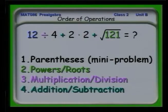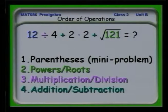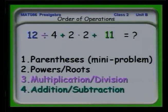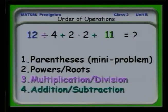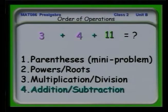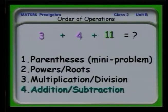Now we go back and substitute that 12 in. The next thing we go after is any powers and roots, having done all the material inside the parentheses. I see I have a square root of 121 in that string, so I replace that with 11. Now I've handled parentheses, powers, and roots. I do the multiplication and division: 12 divided by 4 gives 3, and 2 times 2 gives 4. Finally, addition and subtraction: 3 plus 4 plus 11 gives 18.